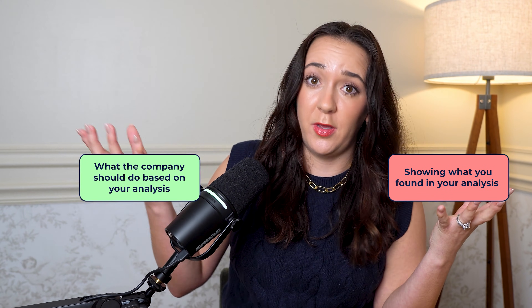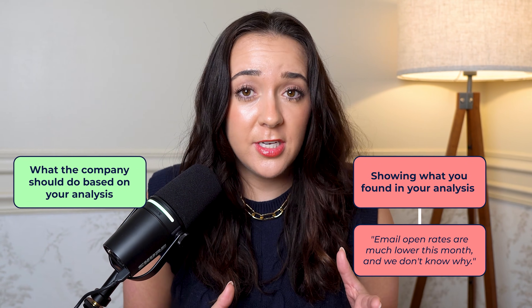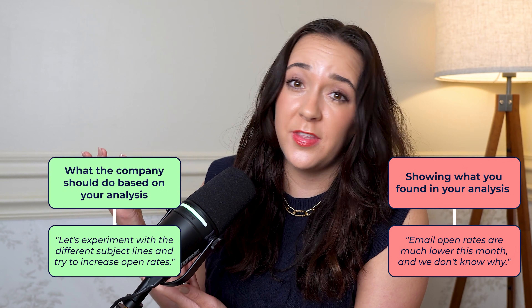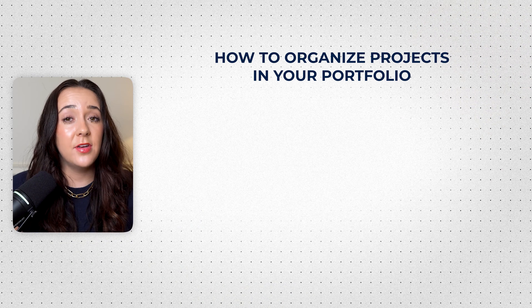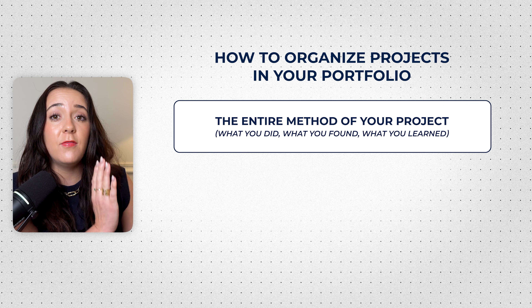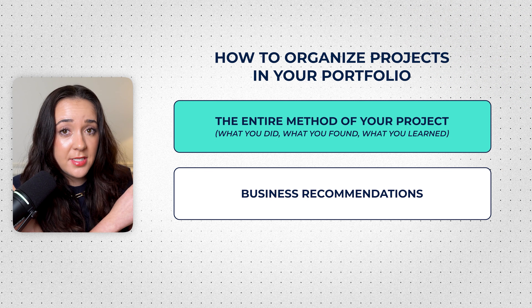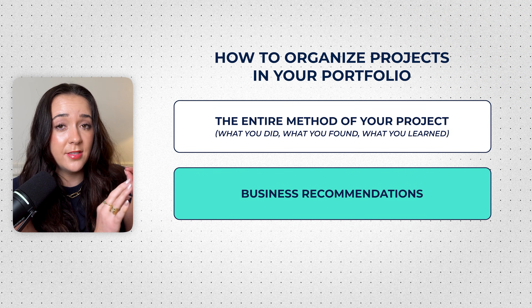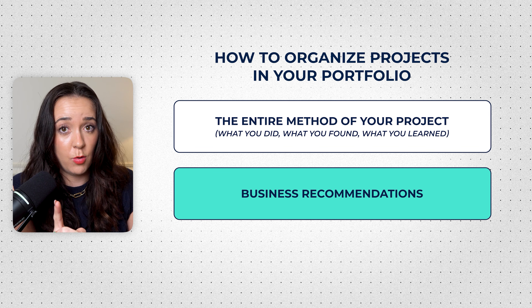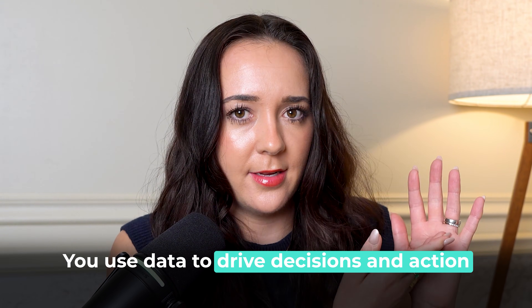The third thing you must do is structure your project around impact, not just insights. That's the difference between showing what you found in your analysis versus what companies should actually do based on what you found. Instead of saying 'email open rates are much lower this month and we don't know why,' craft it into an actual business recommendation — like 'let's experiment with different subject lines to increase open rates.' At the end of every project, you need business recommendations. You did this entire project and learned X, Y, Z — who cares? What do you do with that information? Tie back those insights to actual business recommendations.